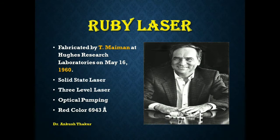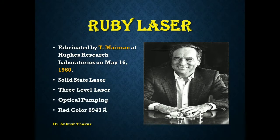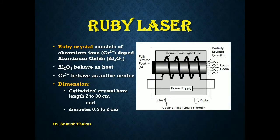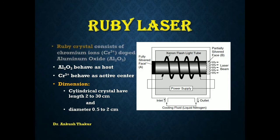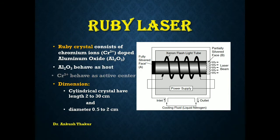It produces a deep red color at wavelength 6943 angstroms. Generally, ruby laser is a pulsed laser. The most important component in the ruby laser is the crystal. The ruby crystal is fabricated from chromium-doped aluminum oxide. Here, aluminum oxide behaves as a host and chromium ions behave as the active center.